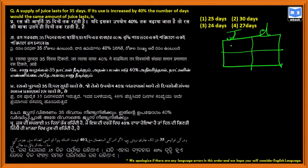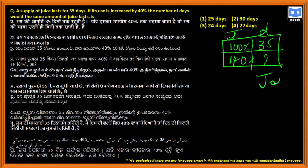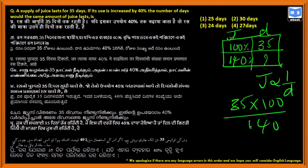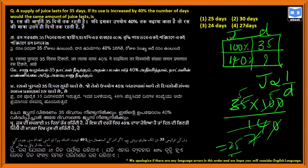100 percent use is for 35 days; if use is increased by 40 percent, that means 140 percent use — how many days? Juice is inversely proportional to days, so: 35 into 100 divided by 140. The zeros cancel, giving 25 days.